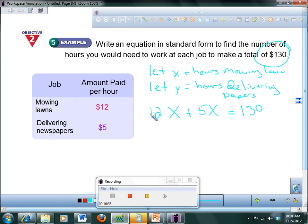Write an equation in standard form to find the number of hours you would need to work at each job to make a total of $130. There you go. So which do you think you would want to do more of? Probably mowing lawns. You make more an hour, right? But if you can't mow enough lawns, then you have to deliver newspapers in your free time.